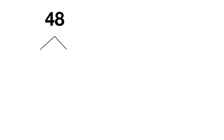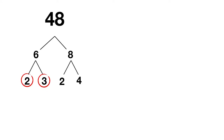So 48 could be split up into 6 times 8. Then the 6 could be split up into 2 times 3 — both prime numbers. The 8 could be split up into 2 times 4. While 2 is a prime number, 4 can be split up into 2 times 2. And because both of those 2's are prime numbers, we can stop here.